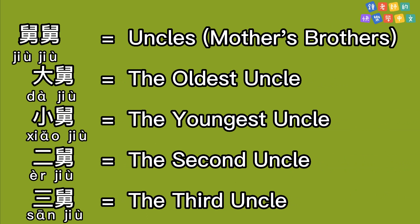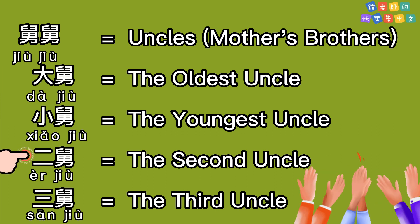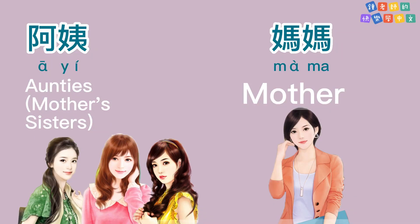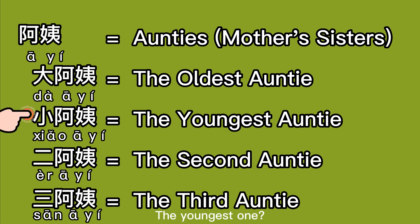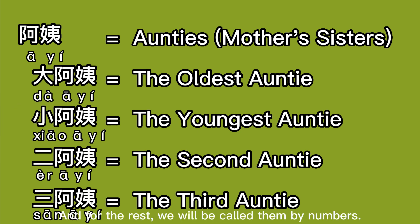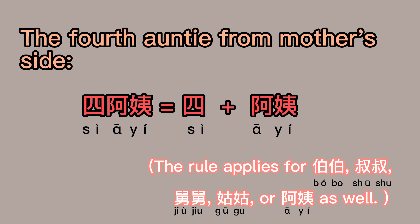Just like 大姑 and 小姑, you say 大舅 for the oldest one. For the second one, we say 二舅. That's right, 二舅. Good job! What about auntie from mother's side? We say 阿姨. The oldest — 大阿姨. The youngest — 小阿姨. And the rest are called by numbers. If you have a fourth one — 四阿姨. That's right, 四阿姨.